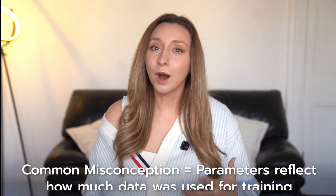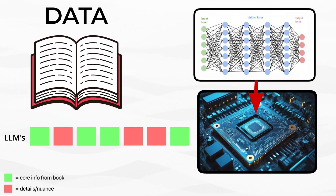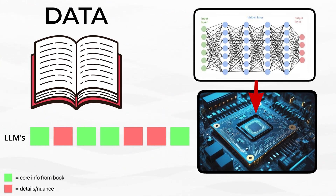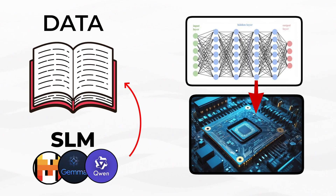Do you think most people even need a jumbo jet model like ChatGPT for everyday stuff, or would a drone-size model actually be enough? A common misconception is that parameters directly reflect how much data a model was trained on. The data is the textbook; the parameters are the brain's control board. A smaller model trained on the same data doesn't just throw huge chunks of the book away — it distills and compresses that information into fewer, sharper settings, tuned to hold on to the patterns that matter for a specific job.